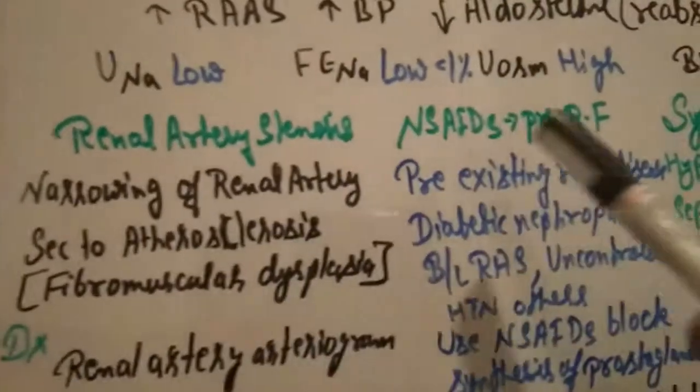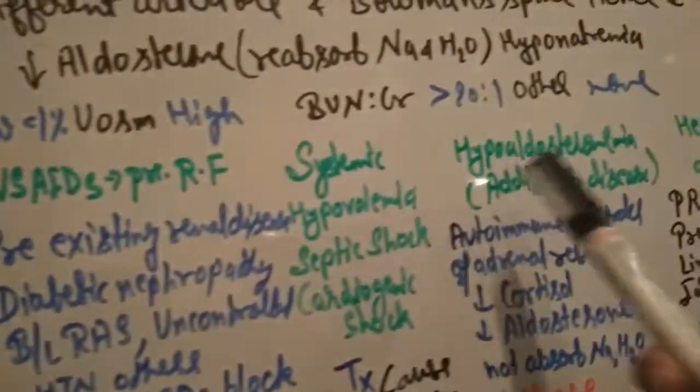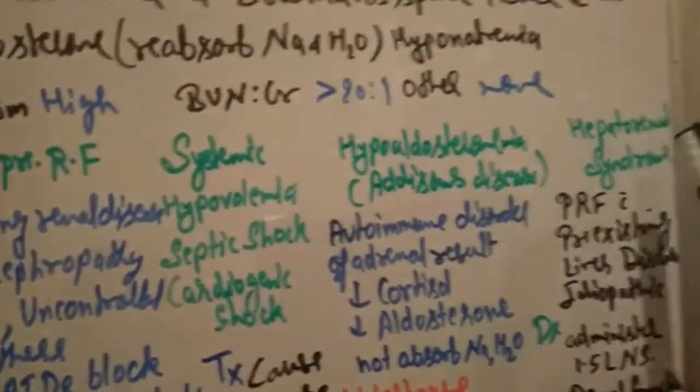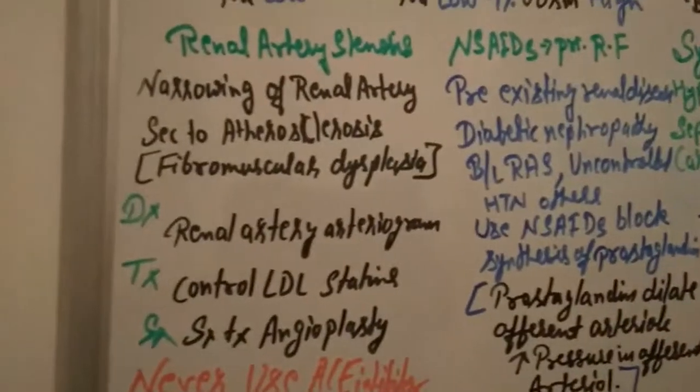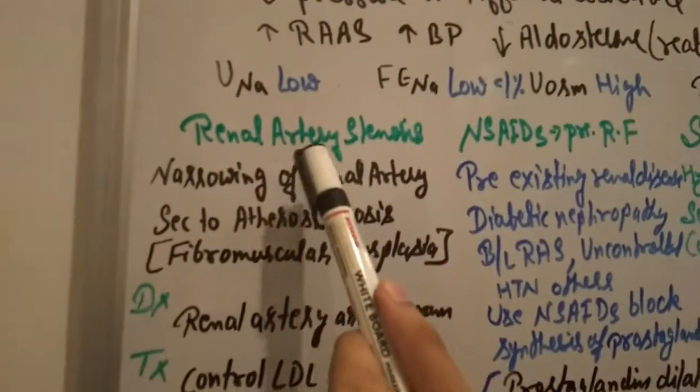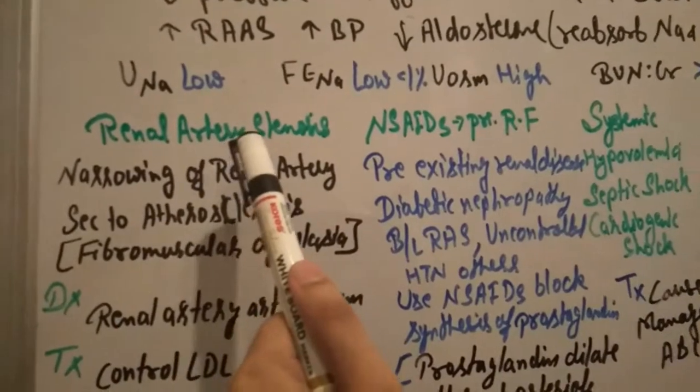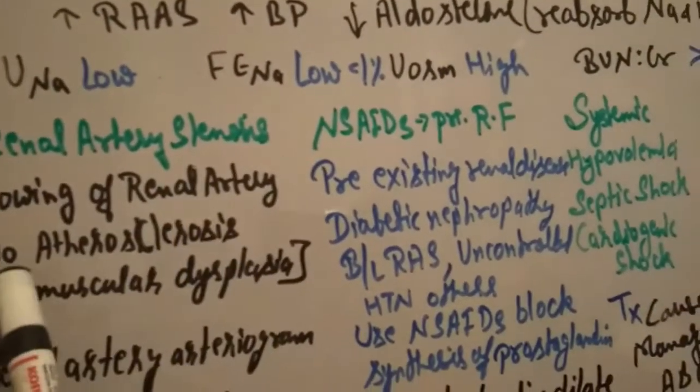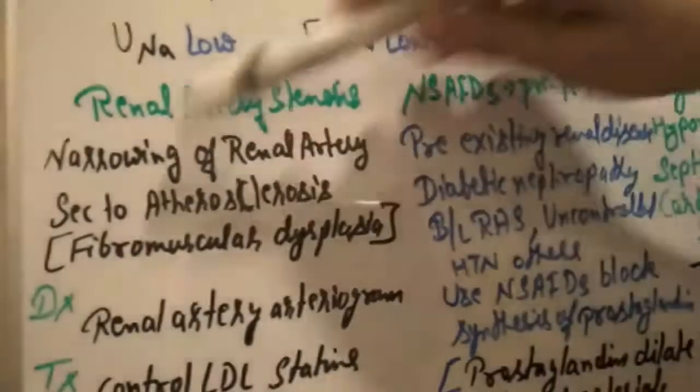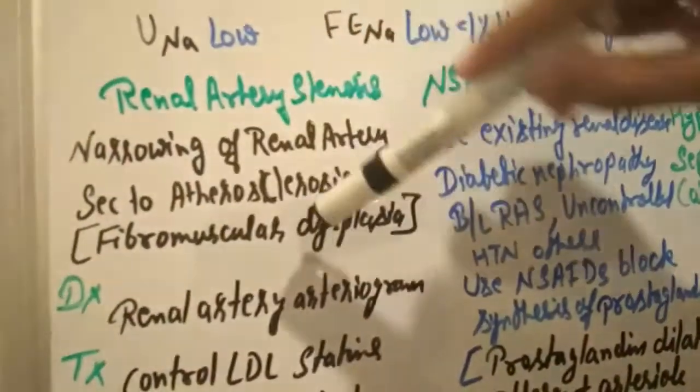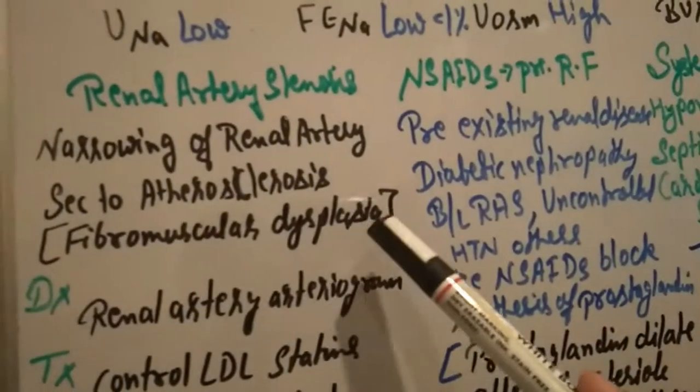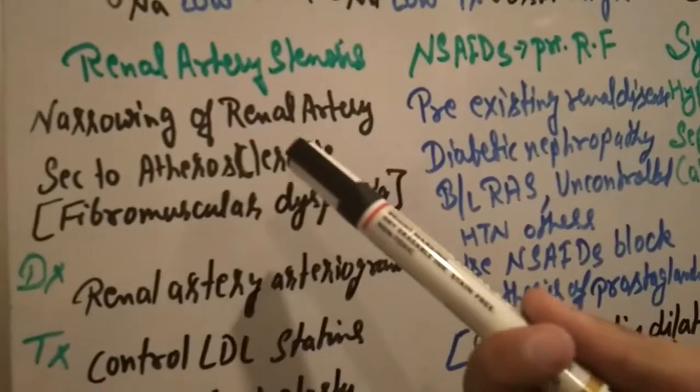What are the causes? Renal artery stenosis, NSAIDs, systemic hypovolemia, Addison's disease, and hepatorenal syndrome. Now I'm going to explain renal artery stenosis. Sometimes bilateral, what happens when there is narrowing of renal artery secondary to atherosclerosis or maybe rare cases fibromuscular dysplasia.